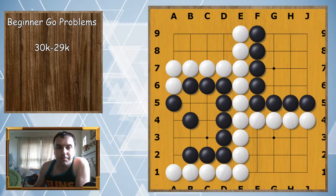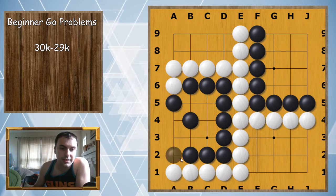Black to finish the territory. The answer is here. This is where the territory is unfinished.